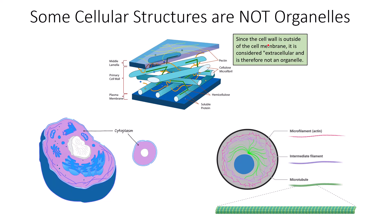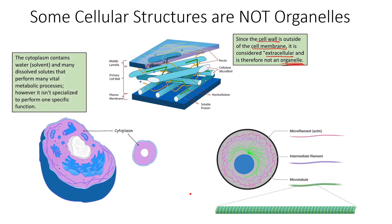Some cellular structures are not considered organelles but do have specific functions. The cell wall is actually outside of the cell membrane, which regulates entry of cellular components from outside to inside and serves as a boundary between inside and outside of the cell. The cell wall, residing outside of that cell membrane, is considered extracellular and therefore by definition cannot be considered an organelle. The cell wall is incredibly important in cells that have it, but it is not considered an organelle.